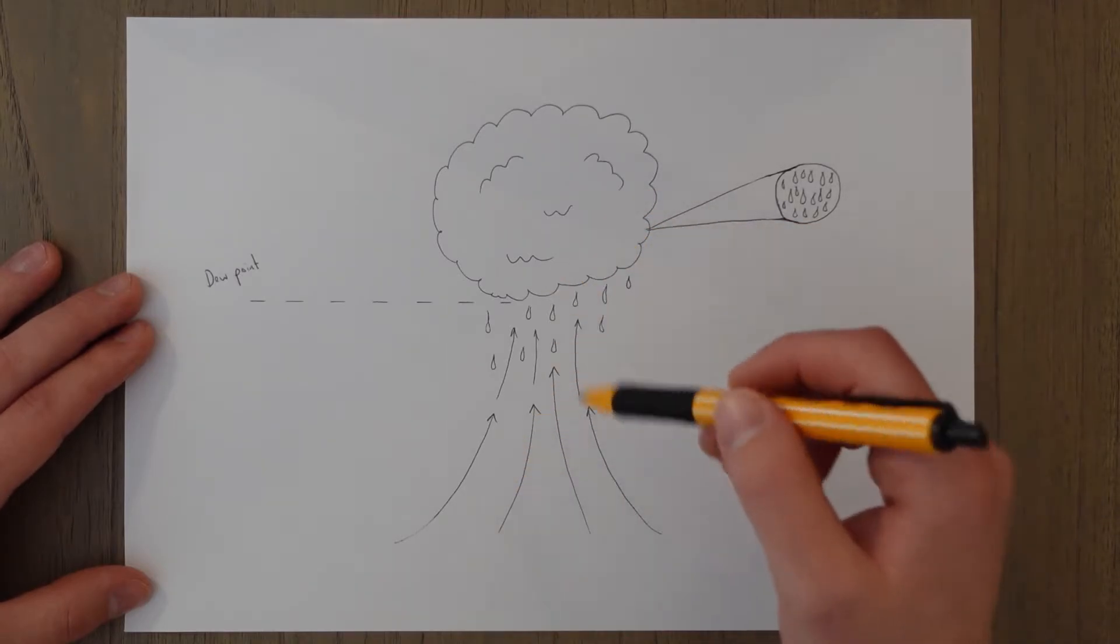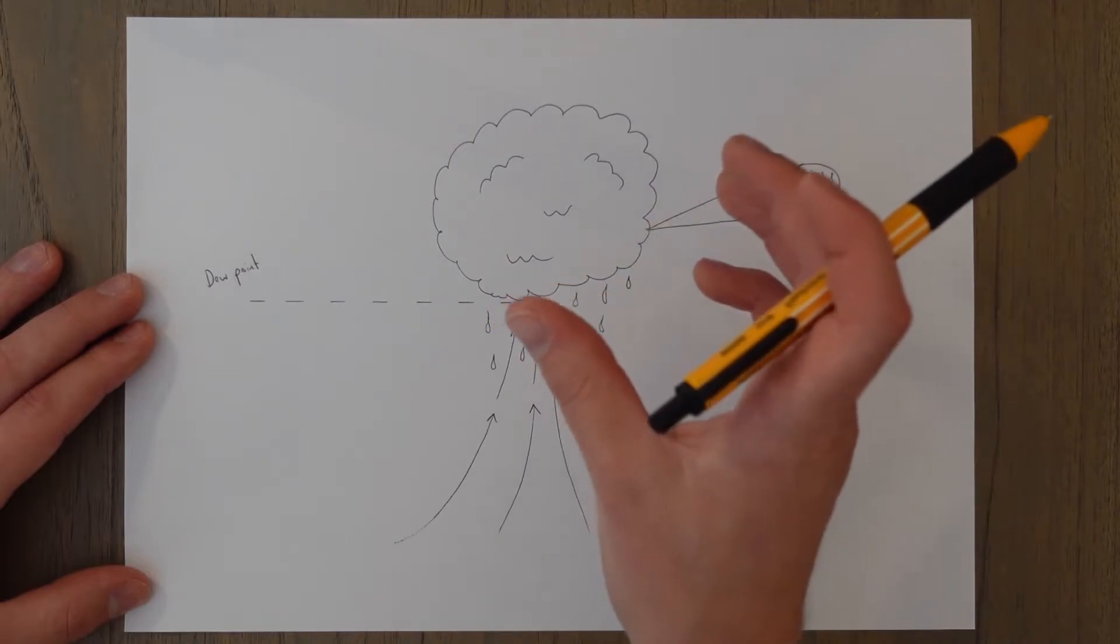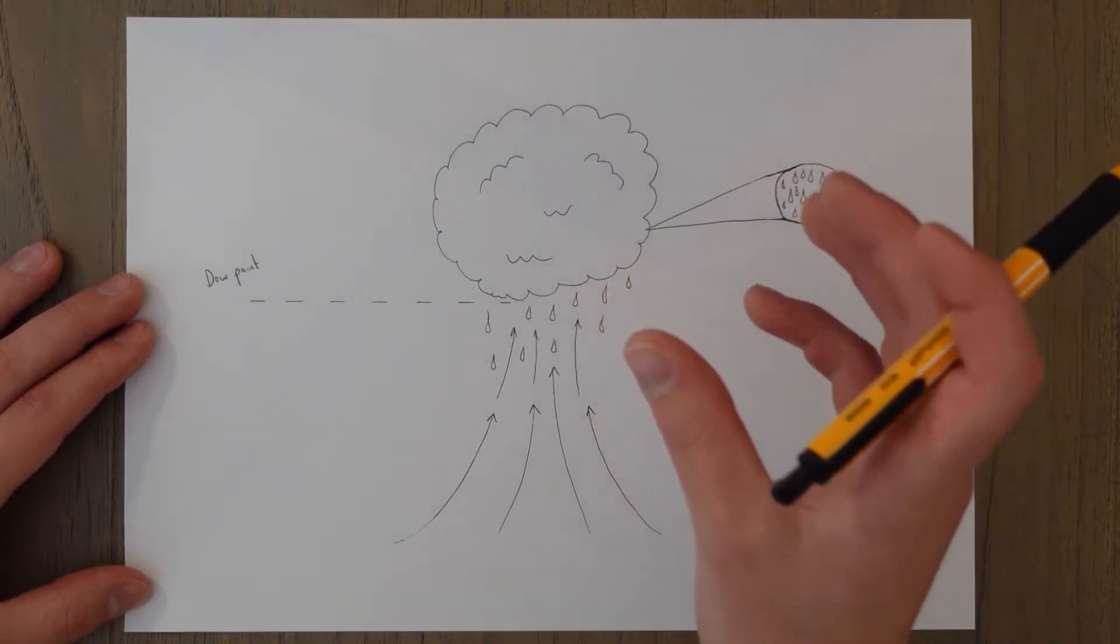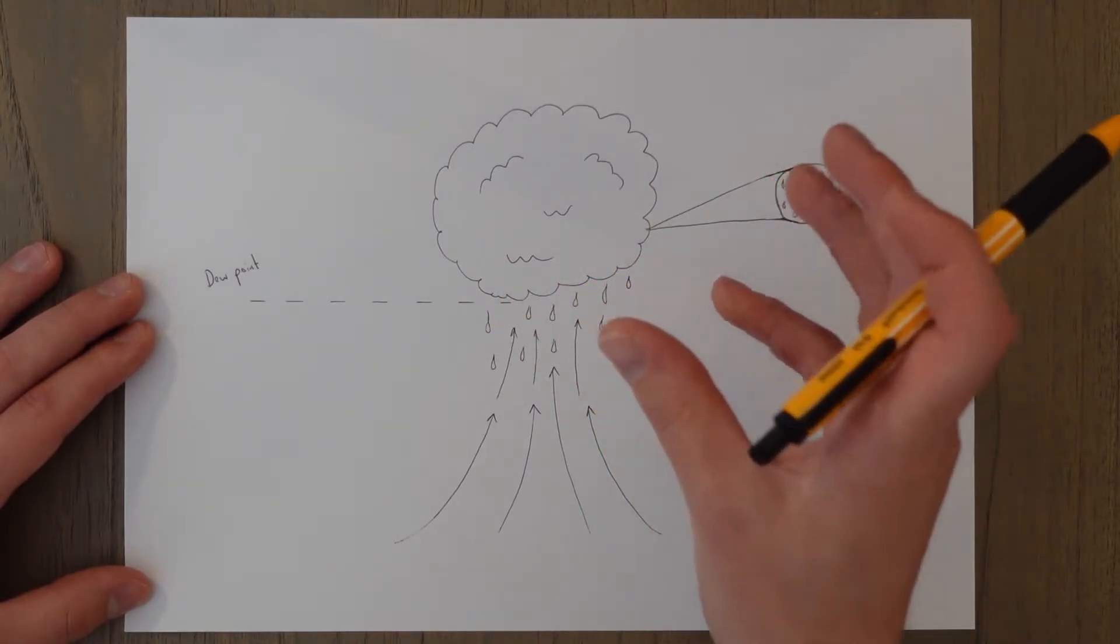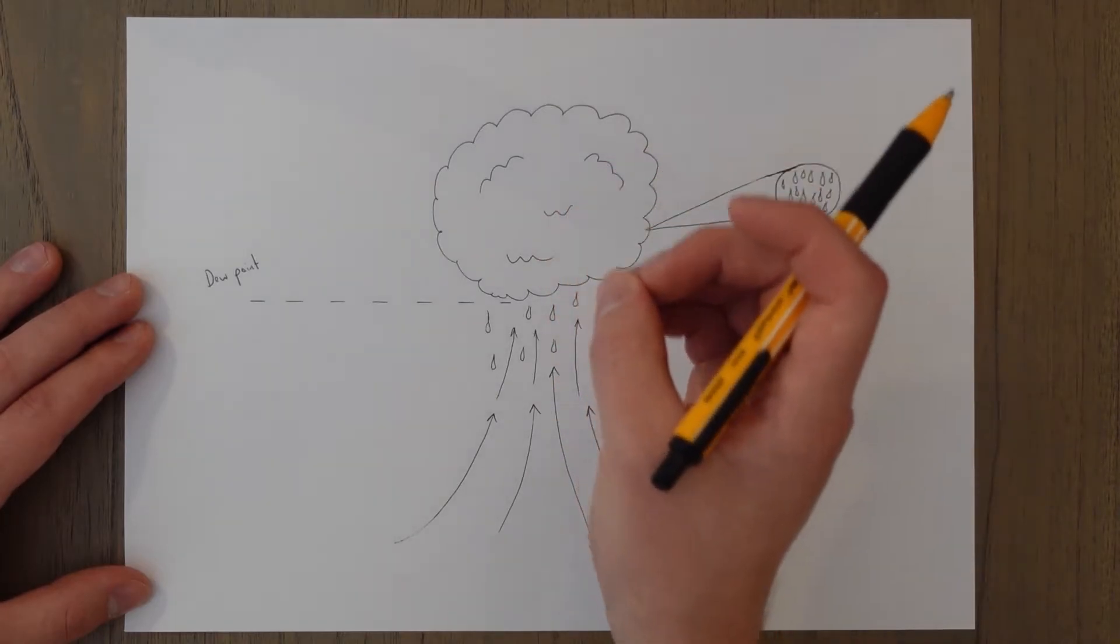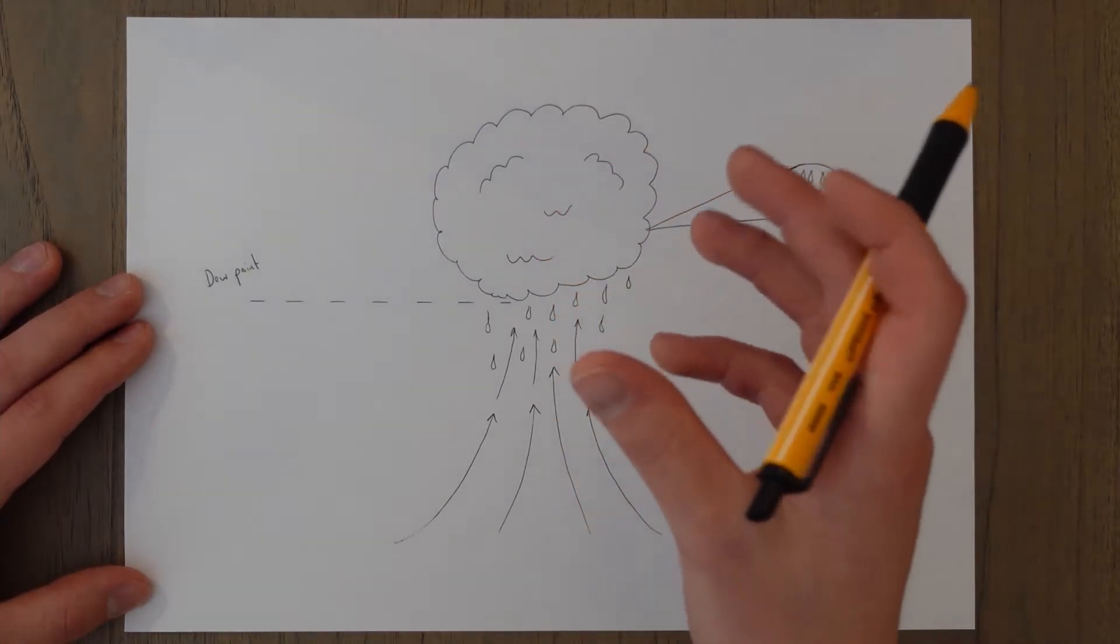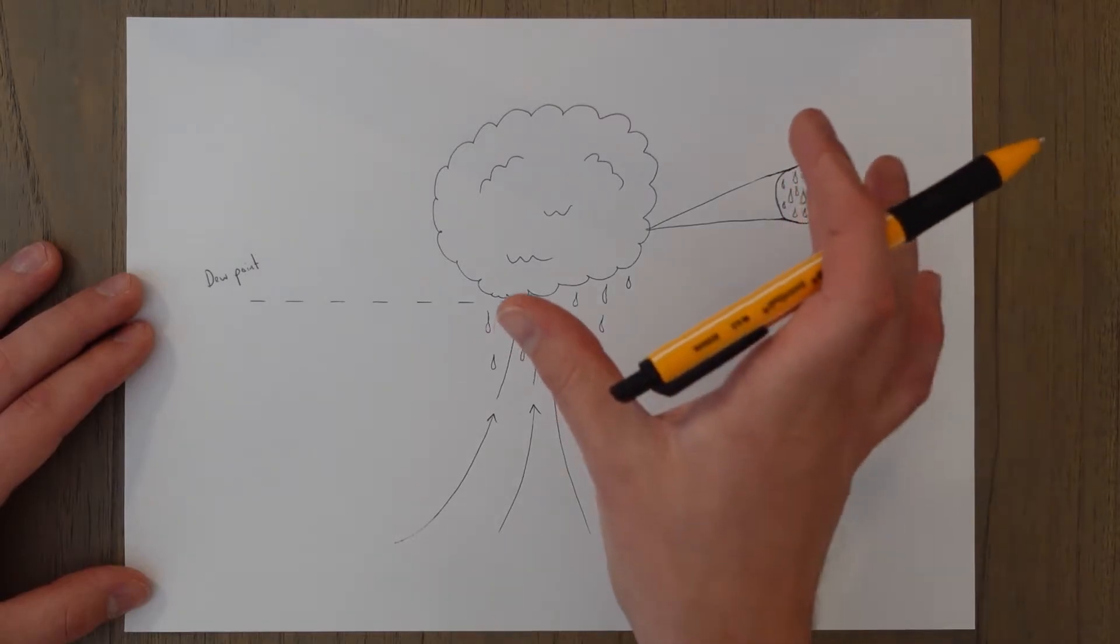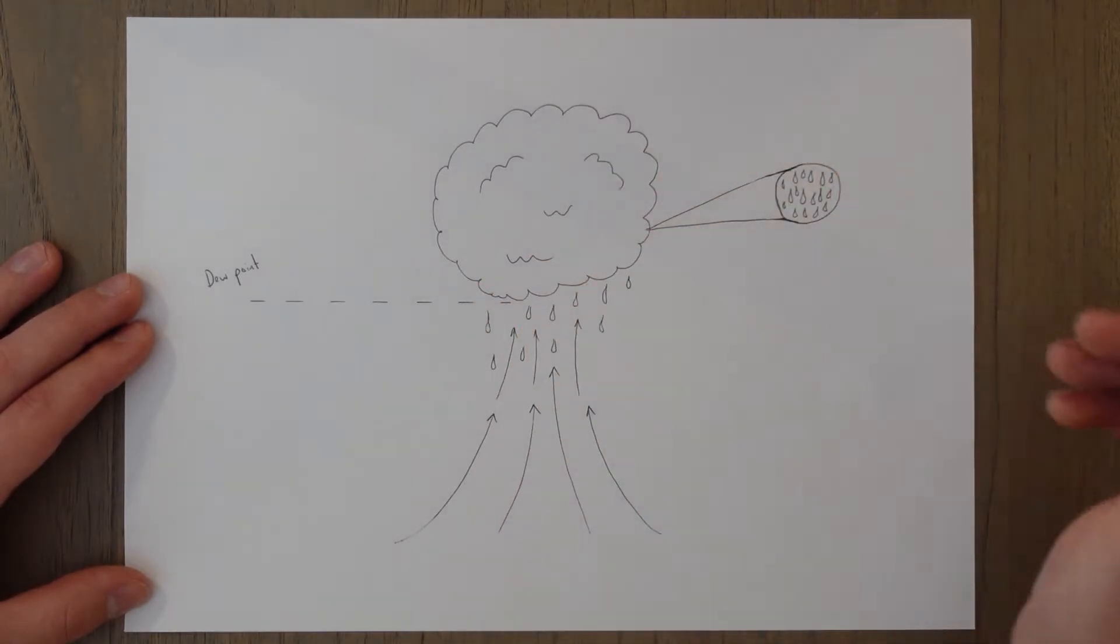This means that the more the air is rising the larger these water droplets will have to become to overcome this rising force for the gravity to pull them down. Water droplets or ice crystals will grow larger by basically colliding into each other and combining in size.